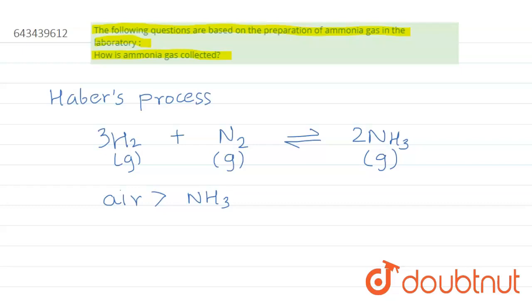So that's why air will go downwards and ammonia will go upwards. So that's why through downward displacement of air collection of ammonia, we collect the ammonia.